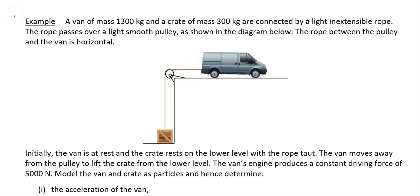In this video we're going to be looking at a van which is on a horizontal surface and it is attached to a crate with a rope going over a pulley. A van of mass 1300kg and a crate of mass 300kg are connected by a light inextensible rope. The rope passes over a light smooth pulley as shown in the diagram below. The rope between the pulley and the van is horizontal.